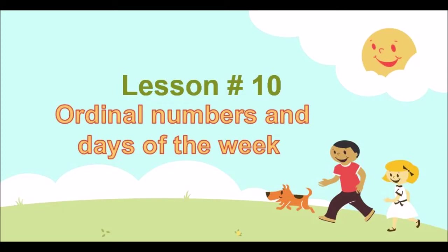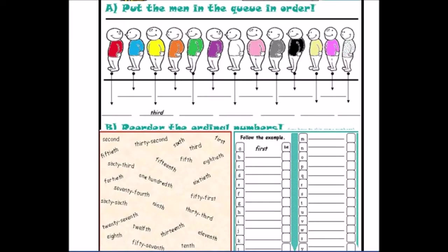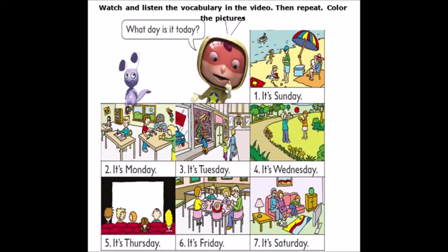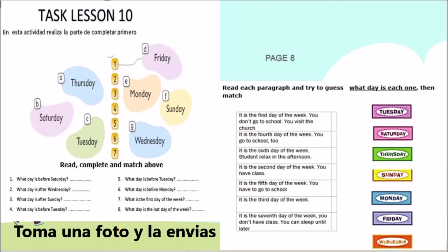Ahora estás preparado para ir a tus fotocopias y trabajar en la lección 10, realizar las diferentes actividades que encuentras allí. Consignar en el cuaderno con ayuda del diccionario — las entenderás — y luego realizar la tarea: tomarle una foto cuando la tengas hecha y enviarla.